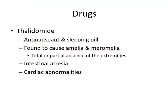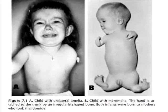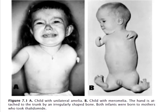Starting with teratogenic chemicals and drugs: thalidomide, which is an anti-nausea and sleeping pill, caused amelia or meromelia — total or partial absence of extremities. It may also lead to intestinal atresia and cardiac anomalies. Cases of unilateral amelia and meromelia are shown where the mother took thalidomide.